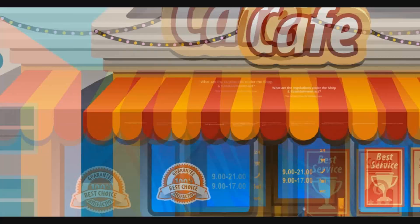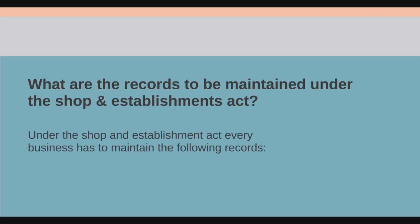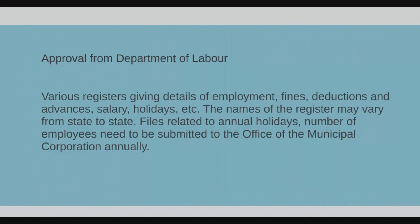What are the records to be maintained under the Shop and Establishment Act? Every business has to maintain the following records: approval from the Department of Labor; various registers giving details of employment, fines, deductions and advances, salary, holidays, etc. The names of the registers may vary from state to state. Files related to annual holidays and number of employees need to be submitted to the Office of the Municipal Corporation annually.